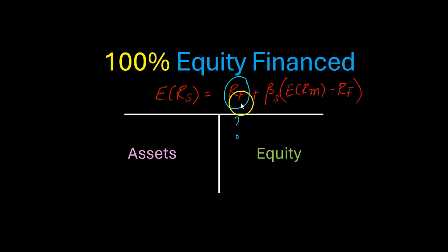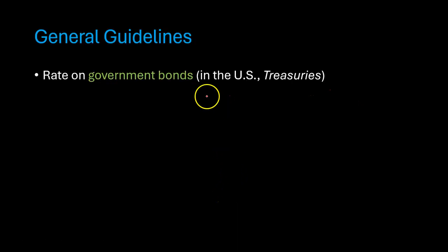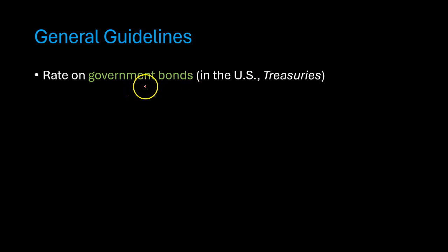So here are some general guidelines. First, when we think about the risk-free rate, this is the rate of return that we can earn without taking on any risk. In general, at least in the US, the asset that we associate as being risk-free is the rate of return that you can earn by investing in government bonds. So when the US government borrows money from you, we tend to consider that as risk-free.